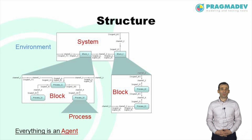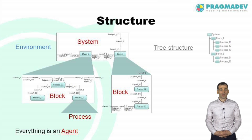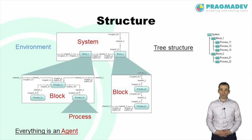Processes are bottom-level agents. They are found in blocks and cannot contain any other agent. An SDL model has a tree structure where the system is the root, blocks are the internal nodes, and processes are the leaves.